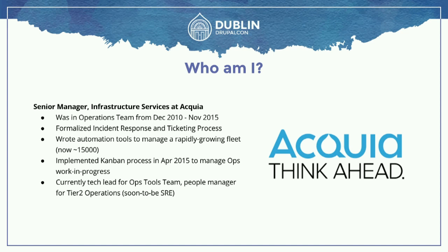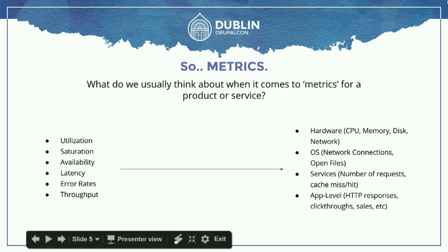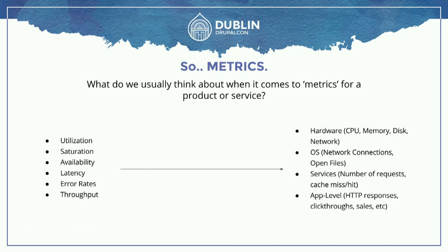So if you were at Ricardo's talk yesterday, he talked a bit about what site reliability engineering is. So, metrics. What do you usually think about when we're talking about metrics? Usually we're talking about things like utilization, saturation, availability, error rates, and throughput.